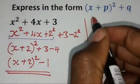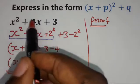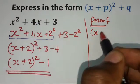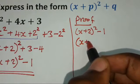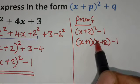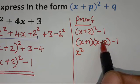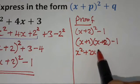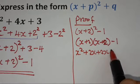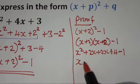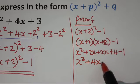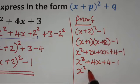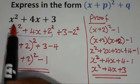So you can see that we have written this quadratic expression in this form. So we can prove it. When we expand and simplify this, we should be able to get the original expression. So we have x plus 2 squared minus 1. x plus 2 squared is the same as x plus 2 multiplied by x plus 2 minus 1. x times x is x squared, x times positive 2 is positive 2x, 2 times x is positive 2x, 2 times 2 is positive 4, then minus 1. These like terms together give 4x, then plus 4 minus 1. We have x squared plus 4x. 4 minus 1 is positive 3. So you can see that we are getting back the original expression.